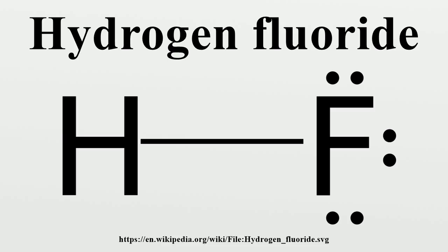In concentrated solution, the additional HF causes the ion pair to dissociate with formation of the hydrogen-bonded hydrogen-difluoride ion: H₃O⁺ F⁻ + HF → H₃O⁺ + HF₂⁻. The increase in free H₃O⁺ due to this reaction accounts for the rapid increase in acidity, while fluoride ions are stabilized by strong hydrogen bonding to HF to form HF₂⁻. This interaction between the acid and its own conjugate base is an example of homo-association.